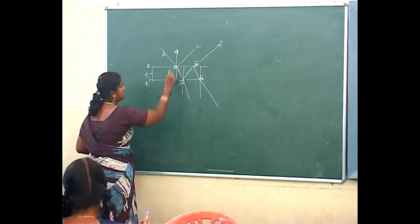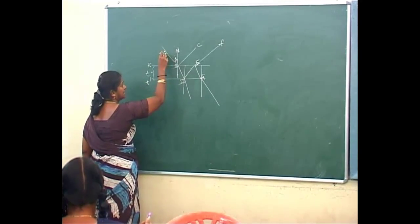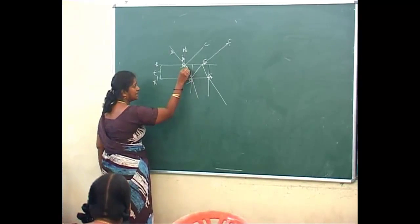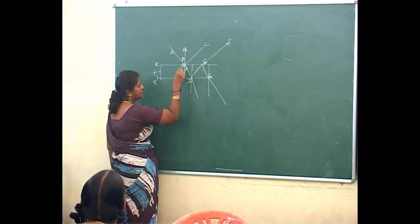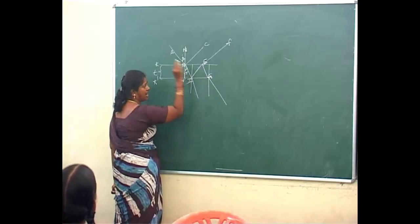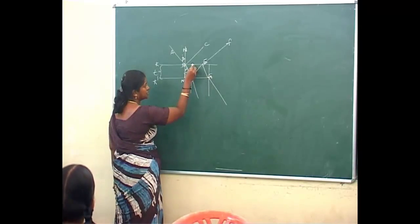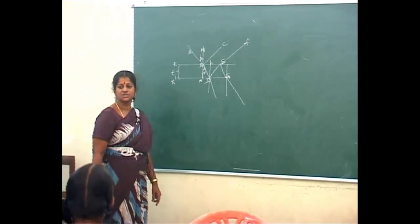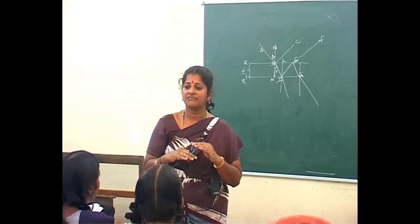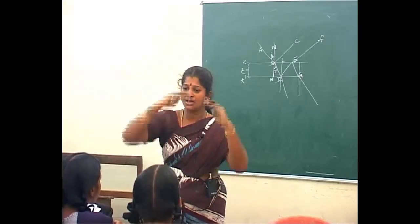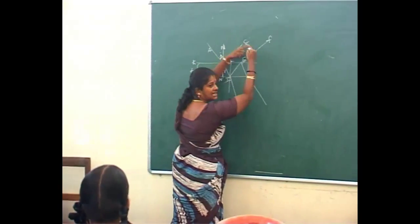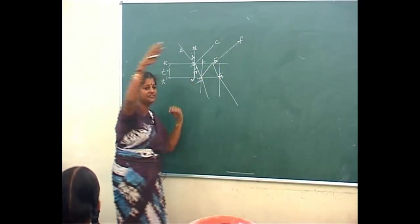Let angle ABN be the angle of incidence I. The rays where you will see the coloured films are only on the surface. The light ray which is emerging up — they interfere and you can see the coloured films on the surface.